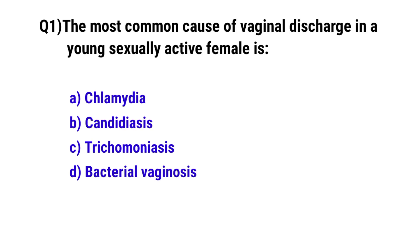Question number one: The most common cause of vaginal discharge in a young sexually active female. The correct option is bacterial vaginosis.